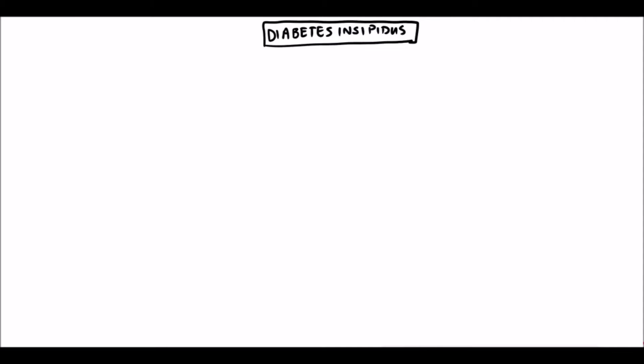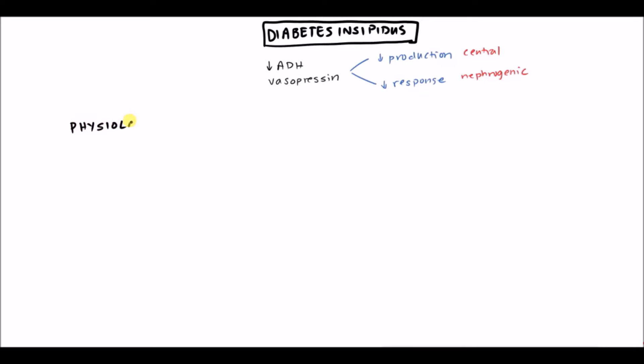Hello, thanks for dropping by to my new video on diabetes insipidus. Let's come up with a generalized definition. Diabetes insipidus is any time you have a problem with ADH. Your ADH is going to be low — ADH is also known as vasopressin — and this can be related to two separate factors: either decreased production, known as central diabetes insipidus, or decreased response to ADH, known as nephrogenic. We'll go into more detail, but first let's cover the general physiology of ADH, because that's important to understanding the pathology.